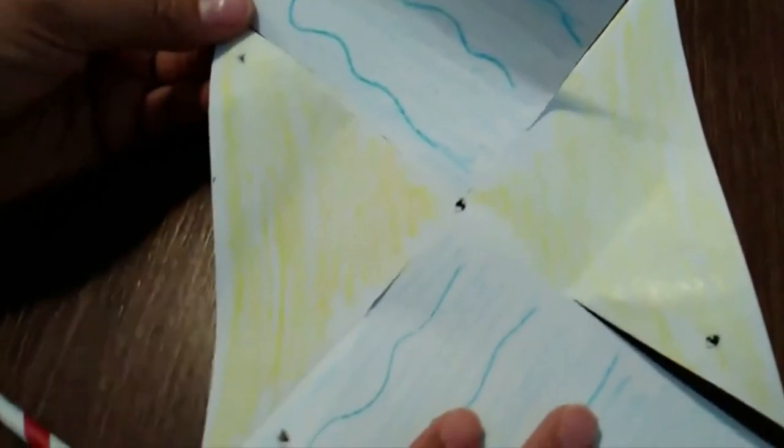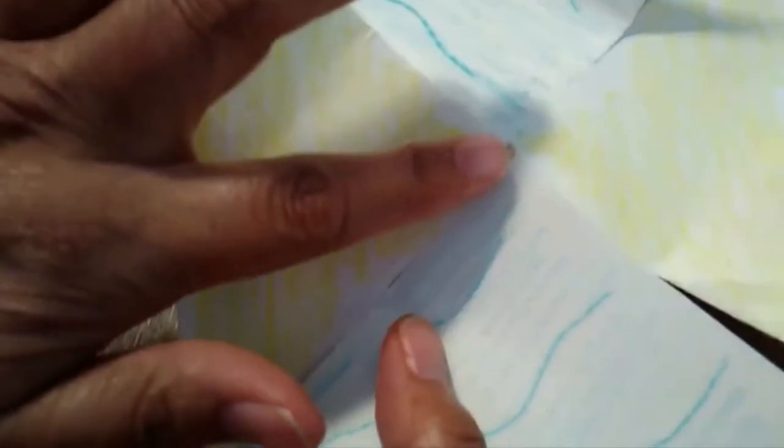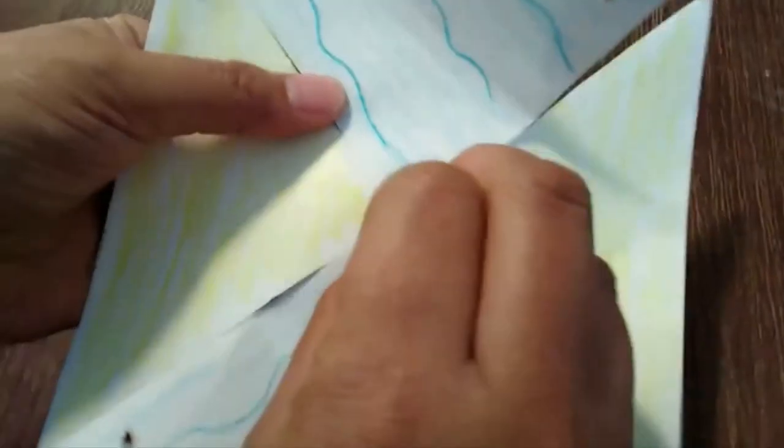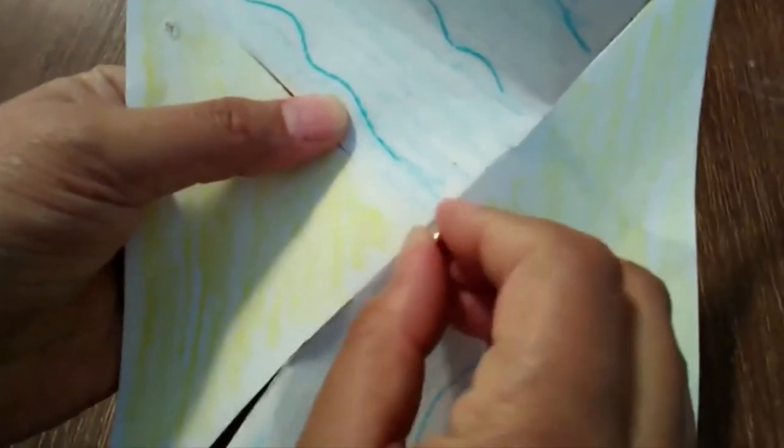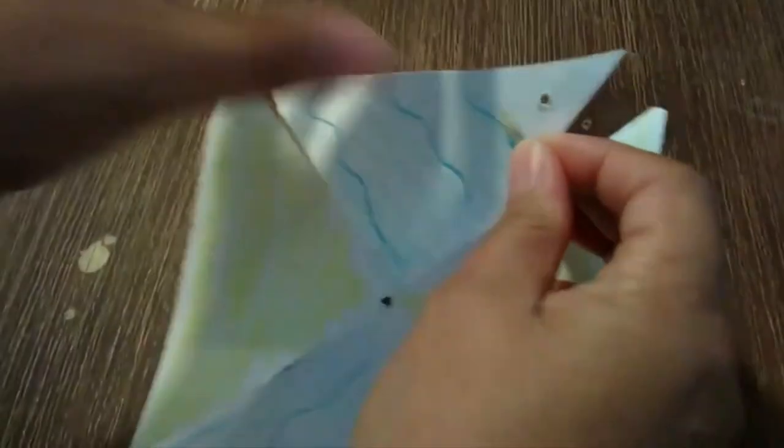The next step is putting your pinwheel together. You'll notice that there's little tiny holes, one in the center and one on every other corner of your pinwheel. Now yours are a lot smaller than mine. What I'd like you to do is take your paper fastener and just twist them around in the holes to make them a little bit bigger. This will make it a lot easier to put the pinwheel together.